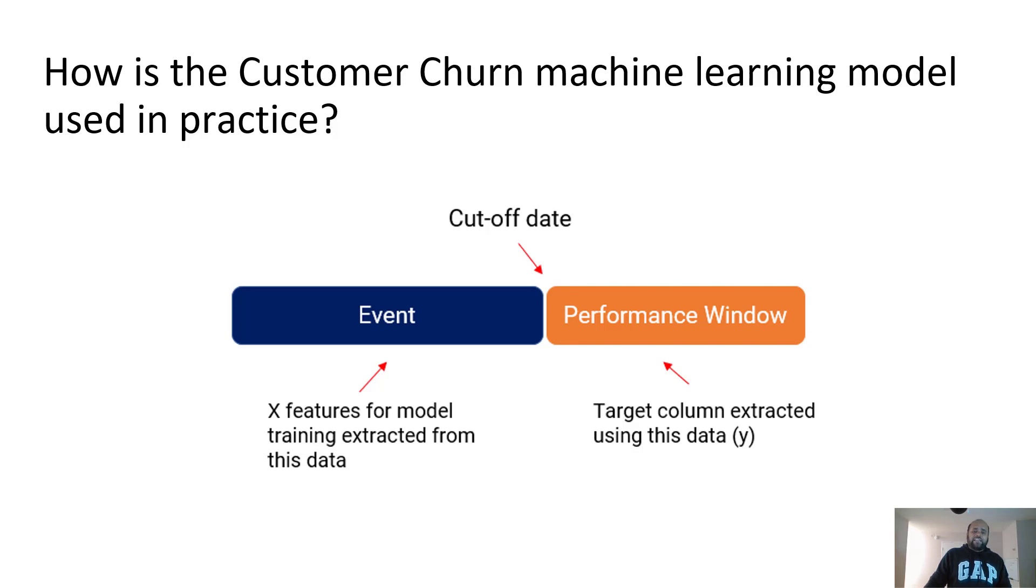And the last date of your event period is your cutoff date. So if today is 31st May and you want to predict whether the customer or your existing customer list, who is at the risk of churning by end of June, then your performance window is June, if you're only talking about one month lag.